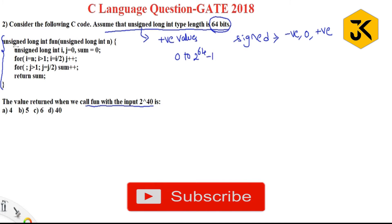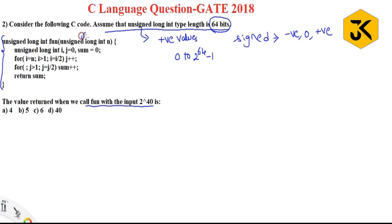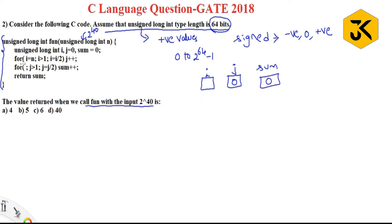They are passing the input 2 power 40 to the unsigned long int function. When this function is executed, it creates memory locations for i, j with default value 0, and sum declared as 0. For i equal to n — where n is 2 power 40 — they have already passed that value.